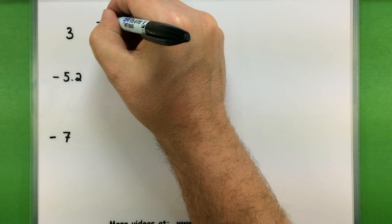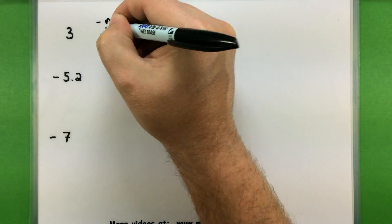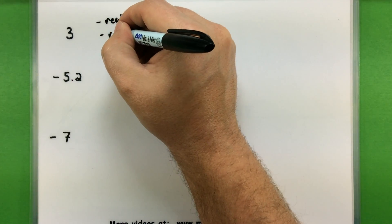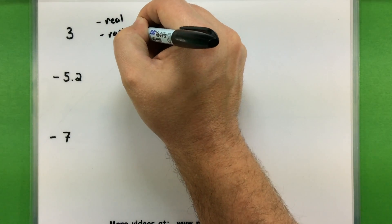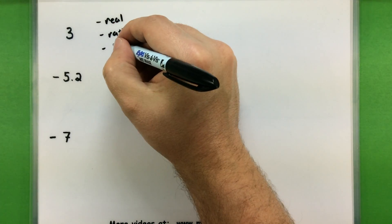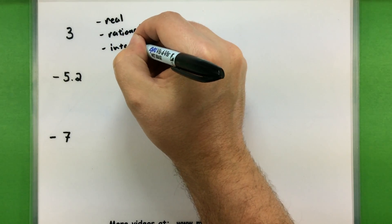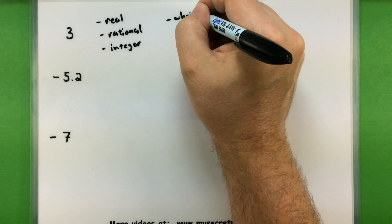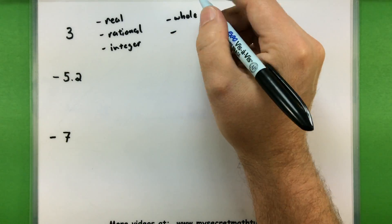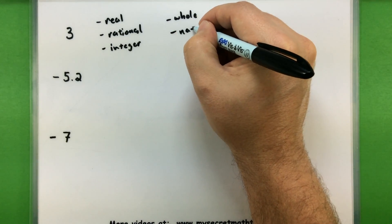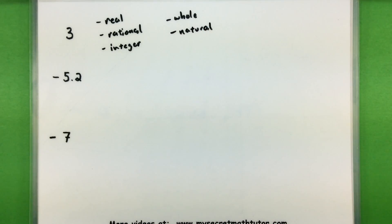Next, 3 is in our real number category. It can be written as a fraction, so we will say it is rational. It is a type of integer. It is a whole number. And of course it is one of our natural numbers, so it's in lots of different categories.